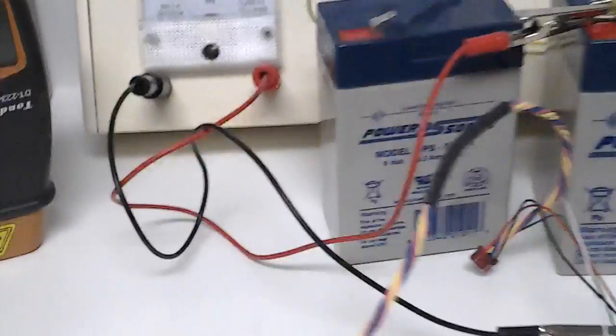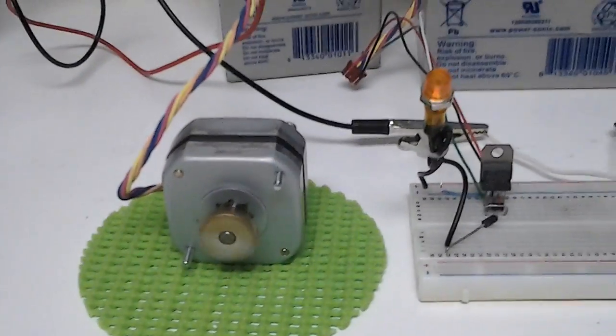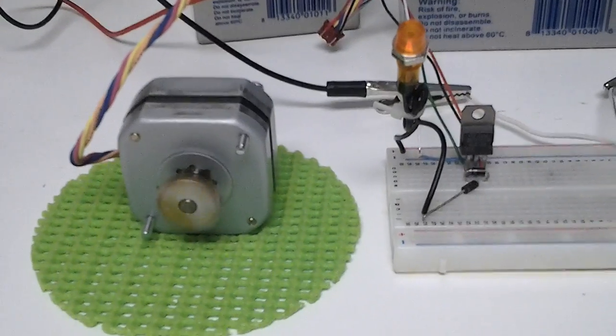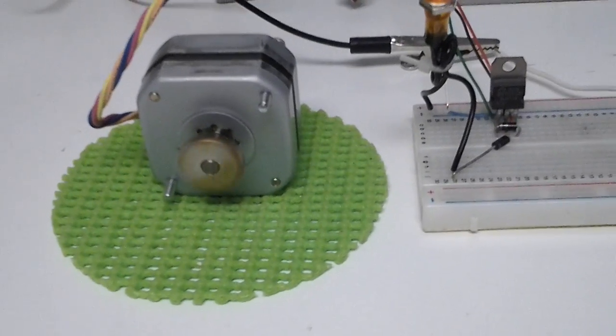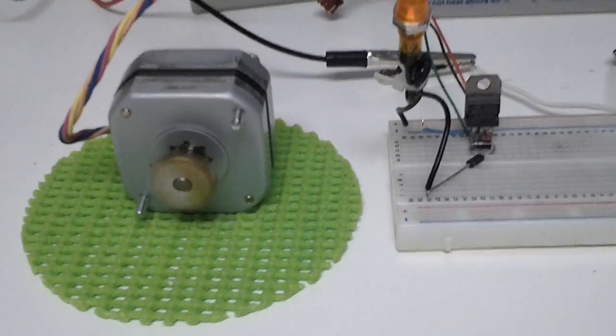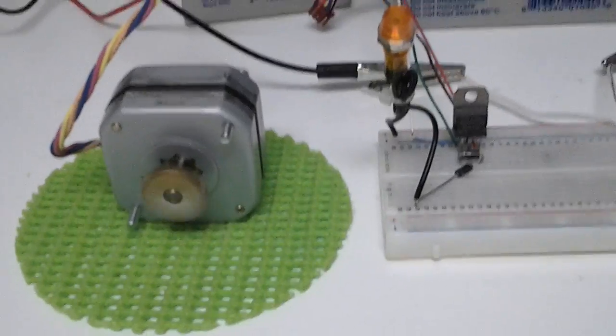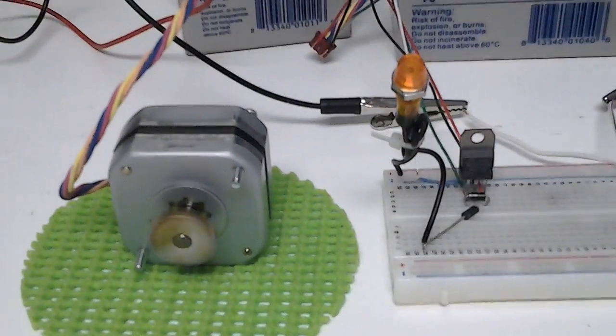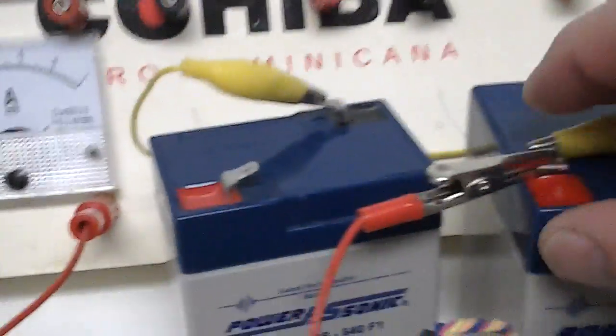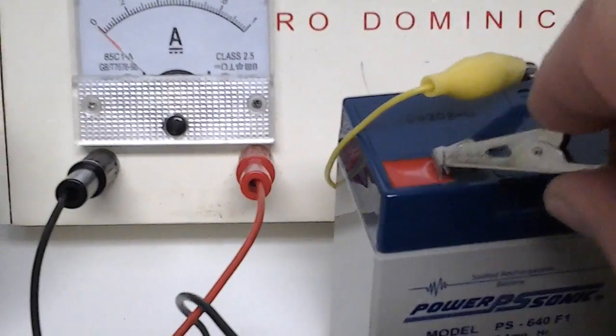It's using roughly 105 milliamps—that's a one-amp meter—so about 105 milliamps to run this little stepper motor off of 12 volts, not quite triple the speed of the six-volt.